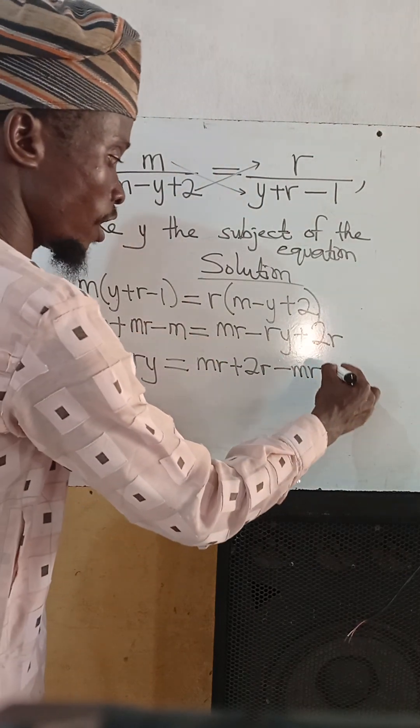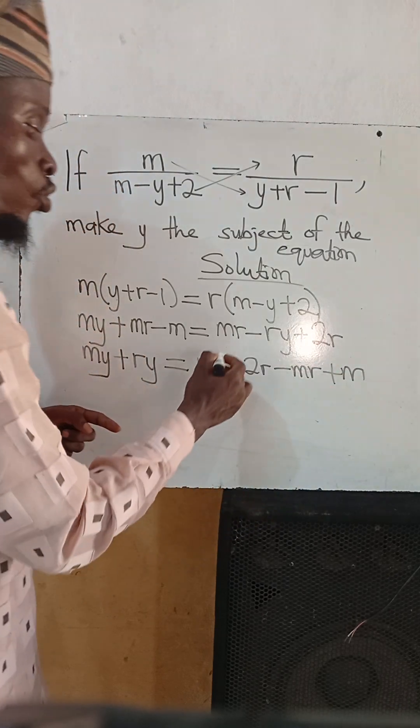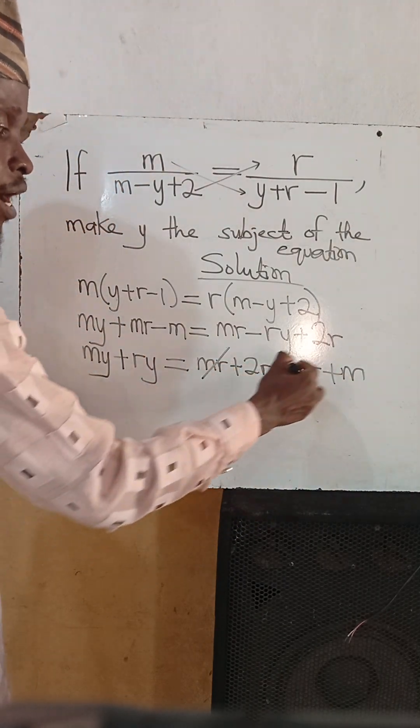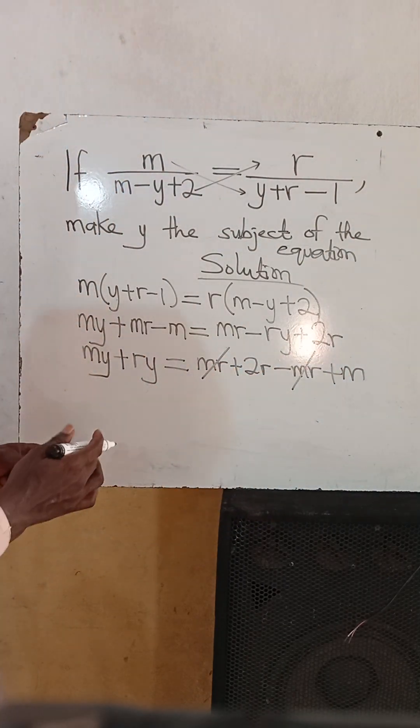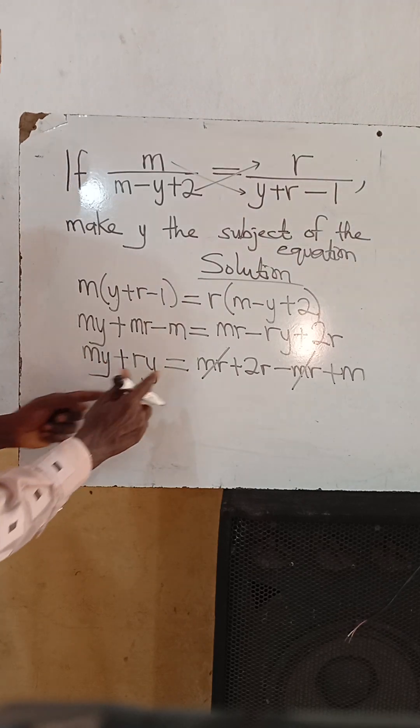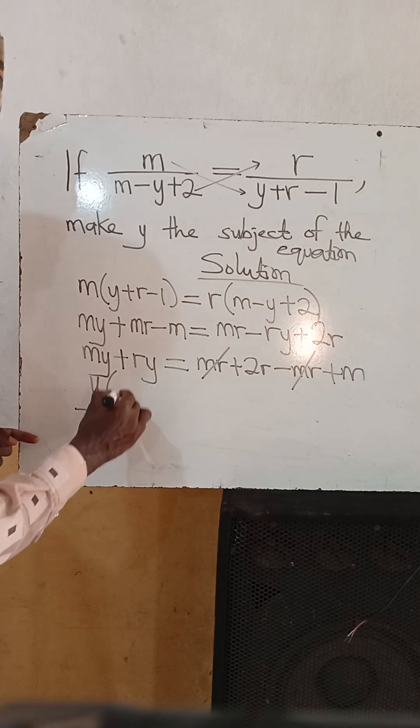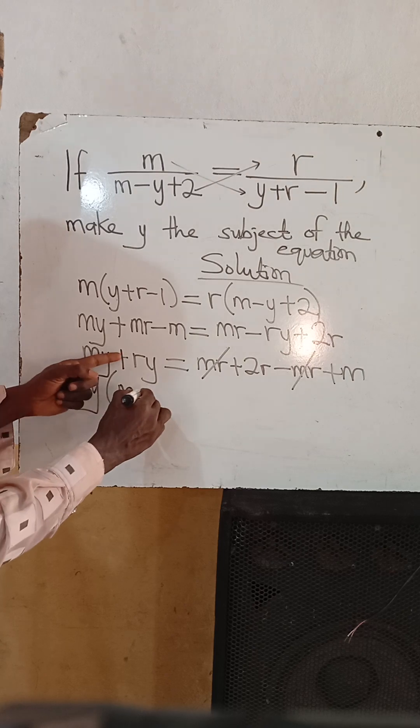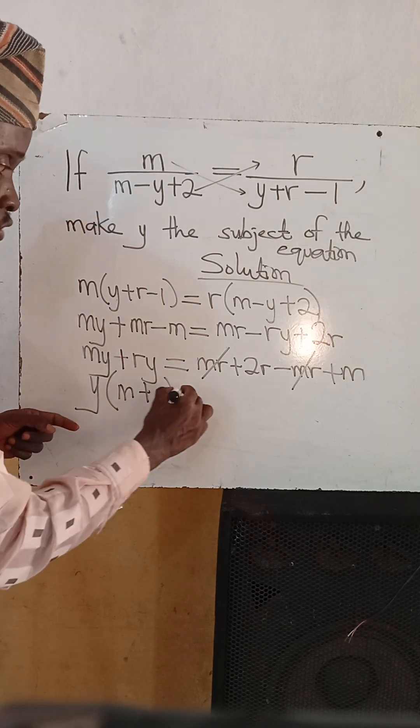Mr minus mr gives us 0. I have y here, I have y here. Let's take the y out. Y into bracket m plus r is equal to...